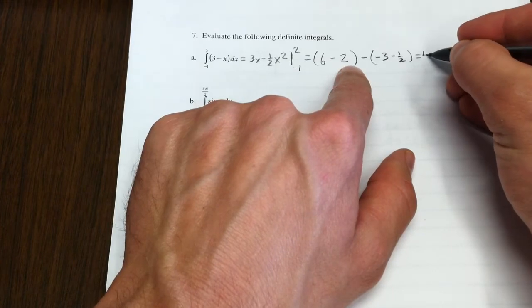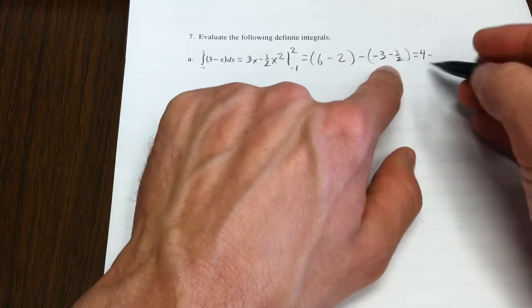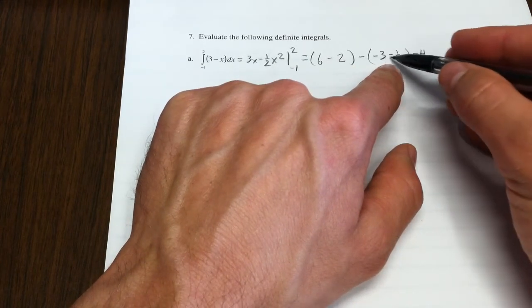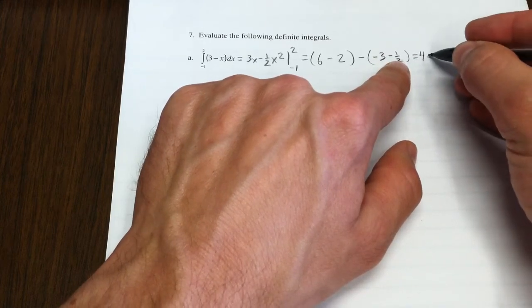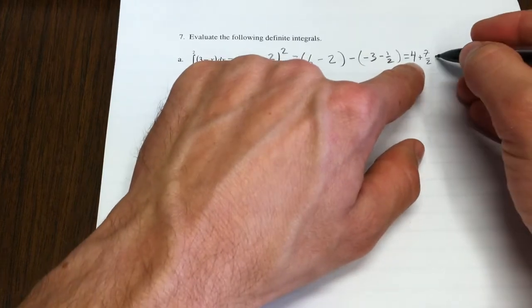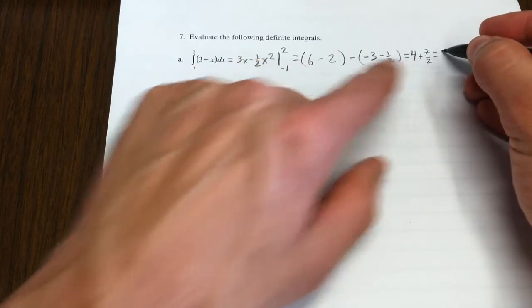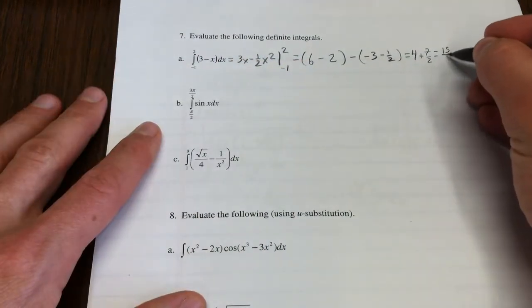So this is 4 minus, I guess that's negative 7 halves, so that's plus 7 halves. This would be 8 halves, so that whole piece is 15 halves.